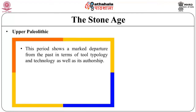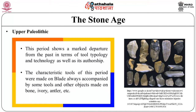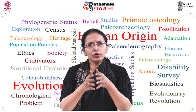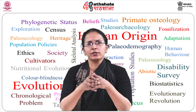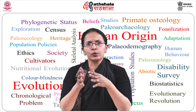The Upper Paleolithic period shows a marked departure from the past in terms of tool typology and technology. Towards the end of the last interglacial, around 34 to 35,000 years ago, Europe faced an entirely different cultural phase. The characteristic tools of this period were made on blades, always accompanied by tools and other objects made on bone, ivory and antlers. In other words, non-lithic material had come into full use during this period. Moreover, artistic activities had also set in with full fury, adding a new dimension to this cultural phase. Thus, Upper Paleolithic mainly contains thick elongated tools with a good percentage of finished bone tools and a good degree of art execution.